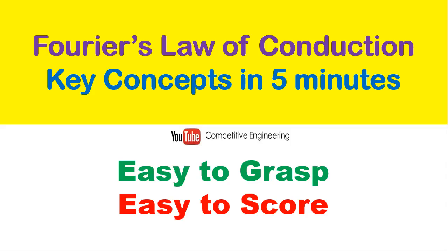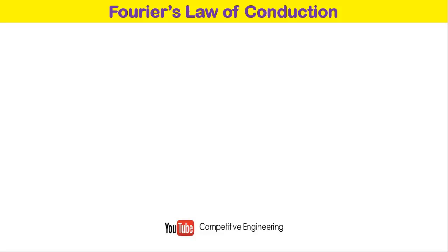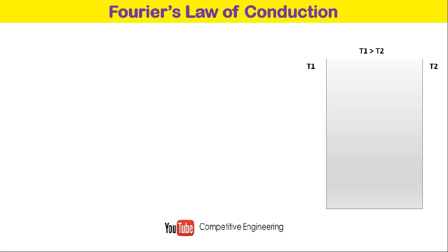Fourier's law of conduction: key concepts. Consider a slab which has temperature T1 on one side and T2 on the other side. If T1 is greater than T2, due to the temperature difference, heat will start flowing from T1 to T2. Let the area of cross section be A and the thickness be dx.